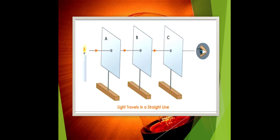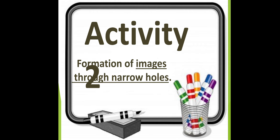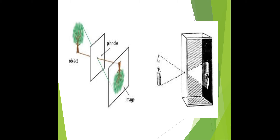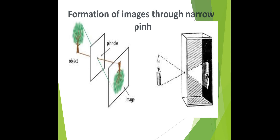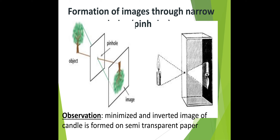Activity 2: Formation of an image through a small hole — the idea of a camera. Take a cardboard box, remove one side and add semi-transparent paper, and make a small hole on the other side. Place a lit candle in front of the hole. On the transparent paper you will see the candle's flame inverted and minimized. Conclusion: a minimized, inverted image of the candle is formed on the semi-transparent paper because light travels in a straight line.